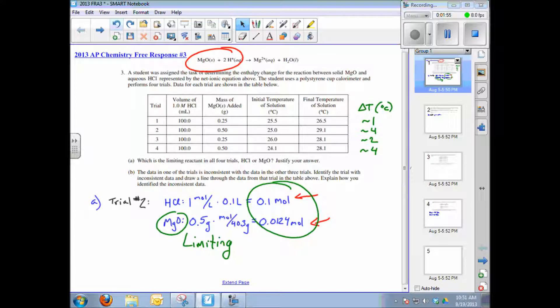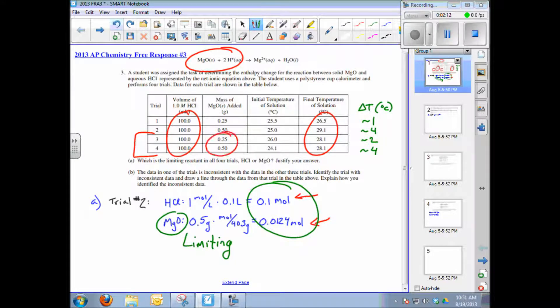There is another way to do this, intuitively. If you look at the four trials, in all four trials HCl was held constant, and yet there's a variation in temperature. In particular, look at trials three and four: when the mass of magnesium oxide is doubled, the delta T roughly doubles as well. It seems to me that temperature change does not depend on the amount of HCl; it depends on the amount of magnesium oxide.